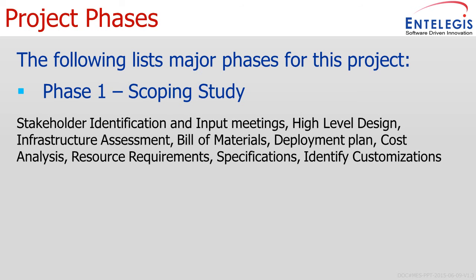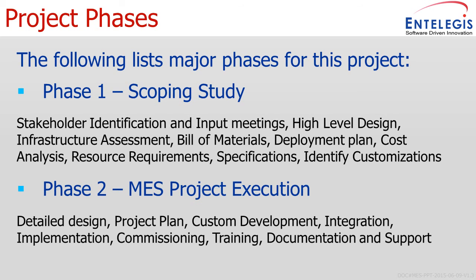The project has essentially two phases. Phase one is a scoping study where we come on site, meet with all stakeholders, identify who they are, and provide a high-level design, infrastructure assessment, full bill of materials, deployment plans, cost analysis, resource requirements, specifications, and identification of any customization areas or places where manual data entry could be automated to reduce labor waste. Phase one gives you a quote on exactly what it will cost to implement. Phase two is the execution phase: detailed design, project plan, any custom development, integration, implementation, commissioning, training, documentation, and configuration — everything needed to ensure the project is fully implemented and realizes the reporting and visualization needed by management.